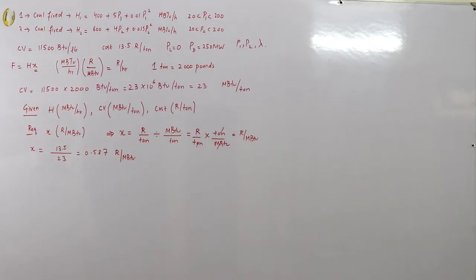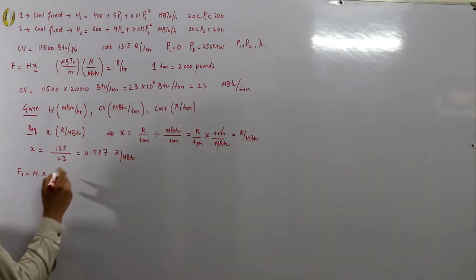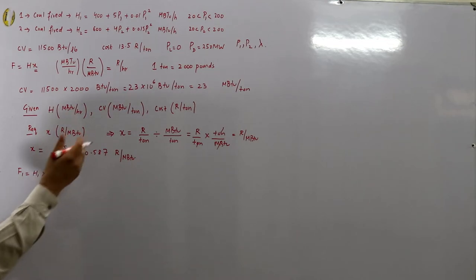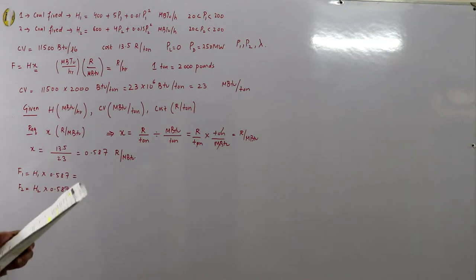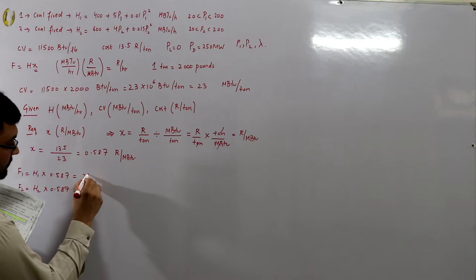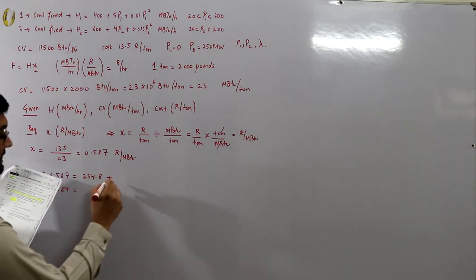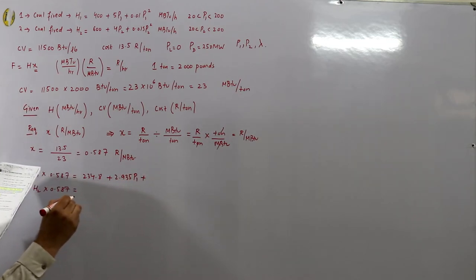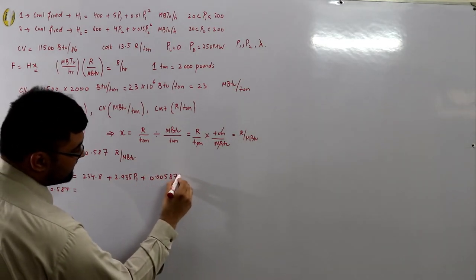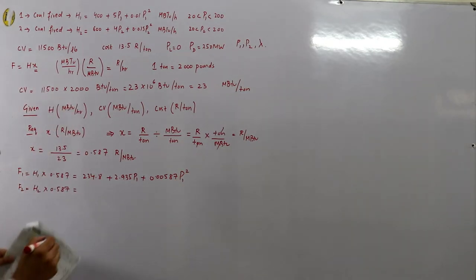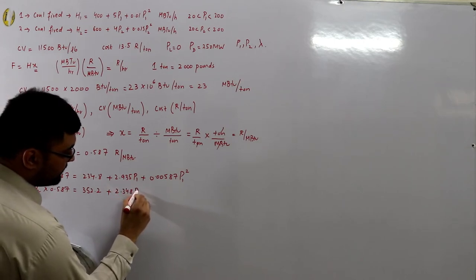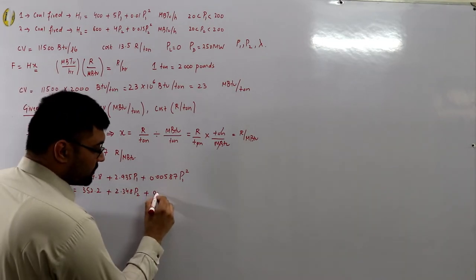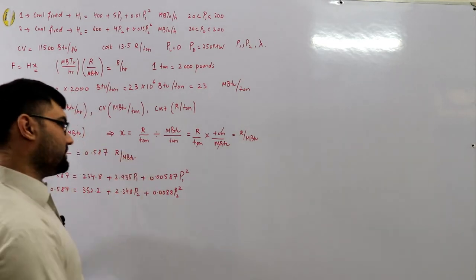Now f1 = h1 × 0.587 and f2 = h2 × 0.587. This gives: f1 = 234.8 + 2.935·p1 + 0.00587·p1², and f2 = 352.2 + 2.348·p2 + 0.00888·p2².